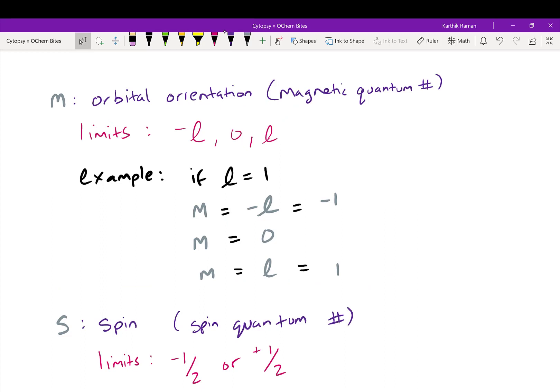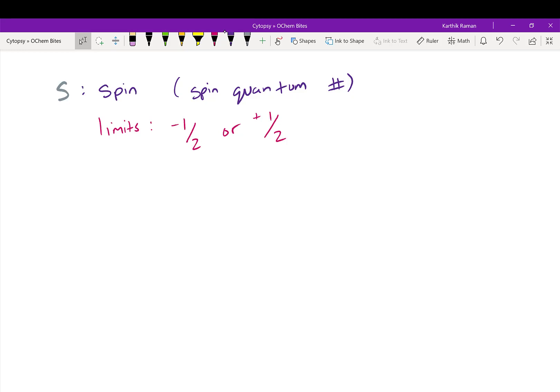Another quantum number is M. M tells you the orbital orientation. I'll show you later that while L tells you what the orbital shape looks like, now that shape can actually move around in 3D space. And that is defined by M. M can be negative L, 0, or L, as shown here, and it's called the magnetic quantum number. So as an example, if L equals 1, M can equal negative L, which is negative 1, it can equal 0, or it can equal L, which is 1.